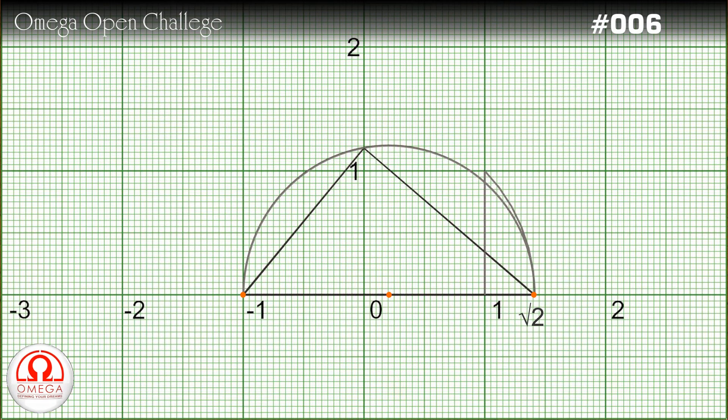The foot of the altitude on the hypotenuse divides it into two segments of length root 2 and 1. As we proved, the altitude must be equal to the square root of the product of these two lengths. Thus the length of the altitude is equal to square root of root 2 into 1, or 2 to the power 1 by 4.